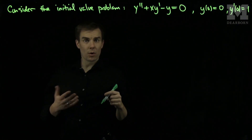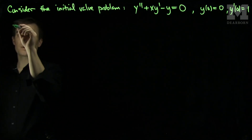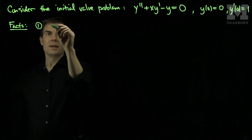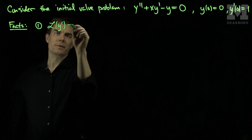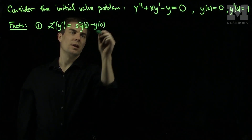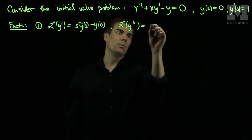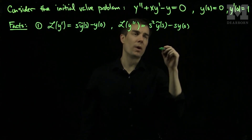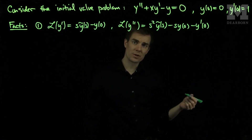To solve this ODE, I'm going to Laplace Transform both sides of the equation and I'll need the following two facts about Laplace Transforms. The first fact is that the Laplace Transform of one derivative is s times the Laplace Transform of the function minus the function at zero. And if I Laplace Transform a second derivative, that will be s squared times the Laplace Transform of the function minus s times y(0) minus y'(0). Those are the rules by which the Laplace Transform changes under differentiation.